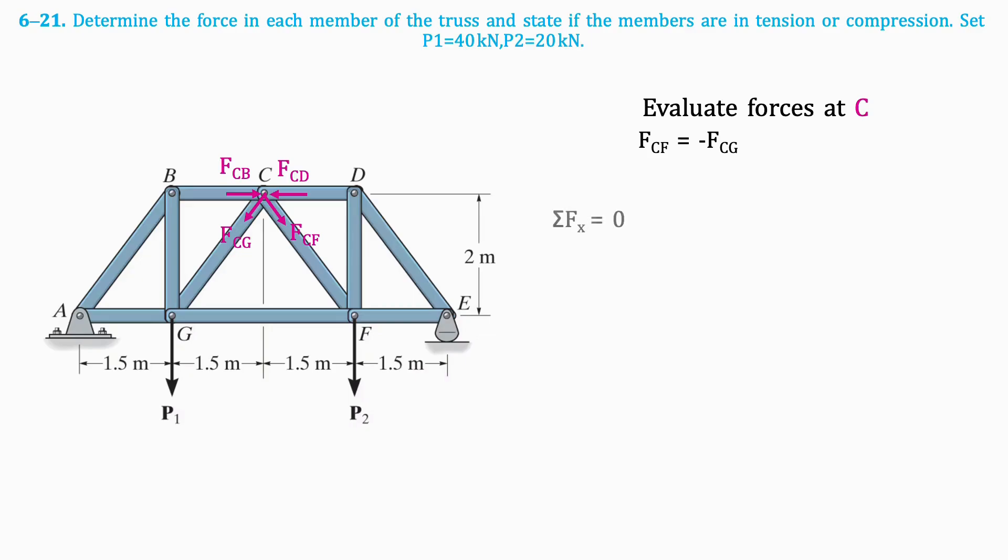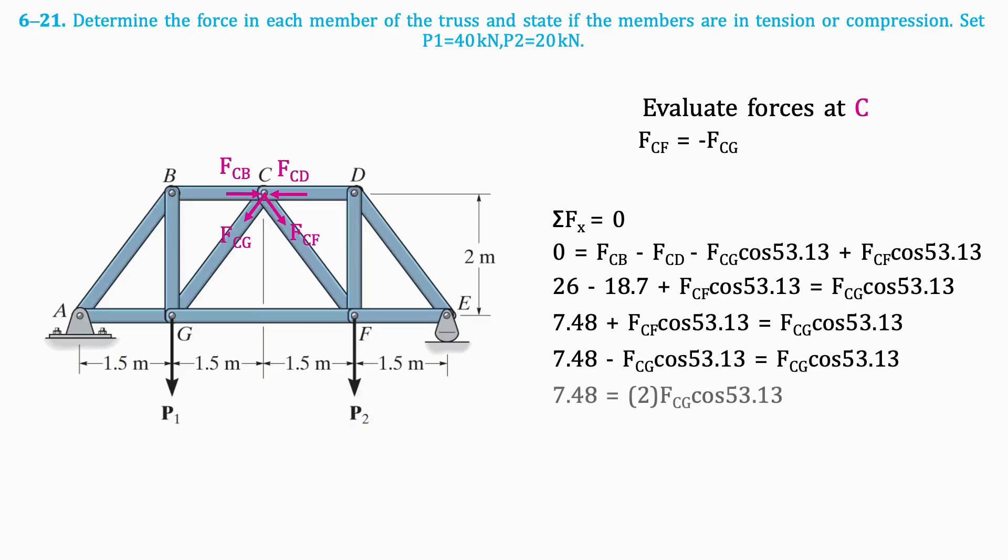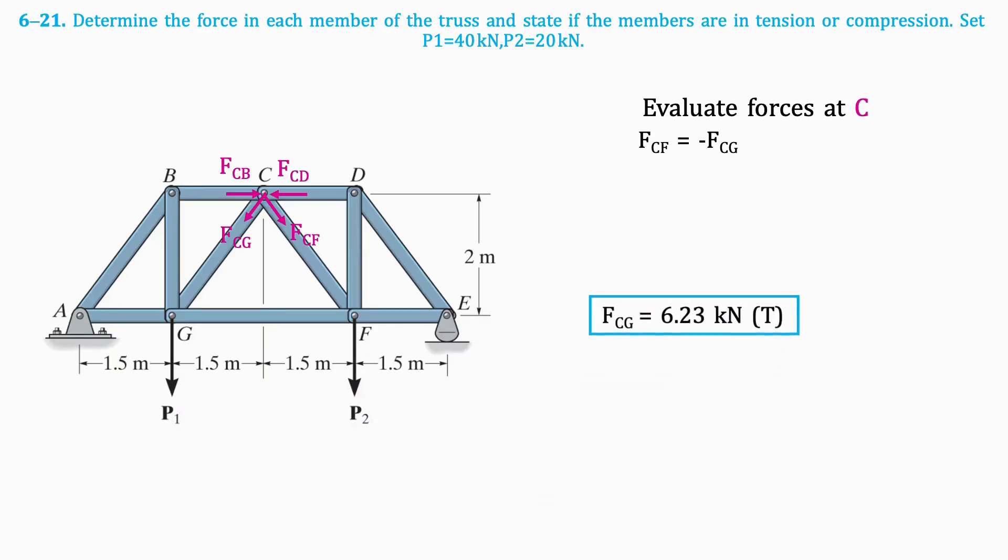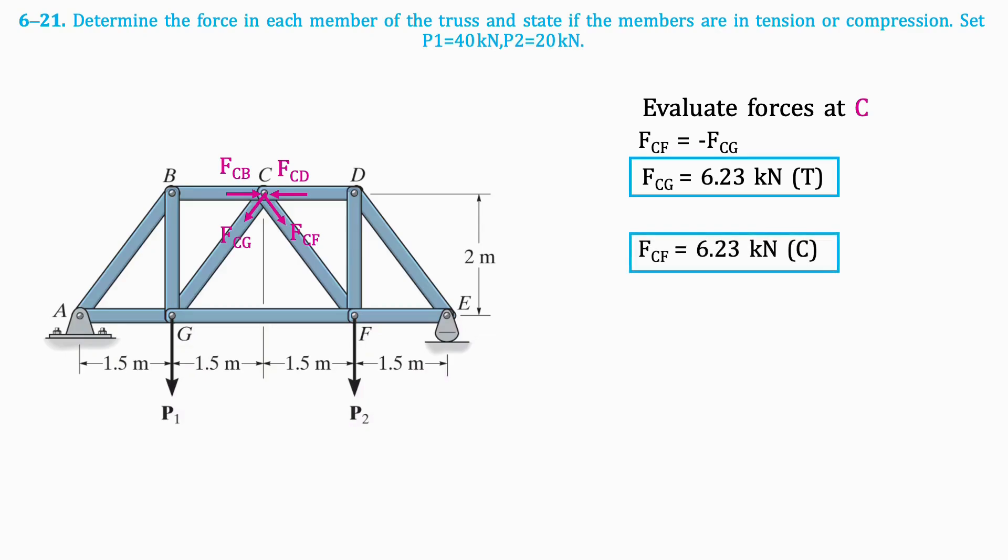So, when taking the sum of horizontal forces, we can make the following simplification, which helps solve for the value of FCG. This is equal to 6.23 kN in tension. Knowing FCF is equal but opposite, this means it must be in compression.